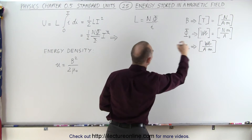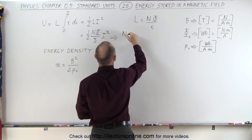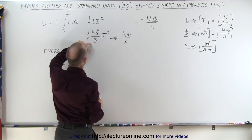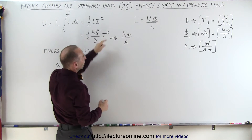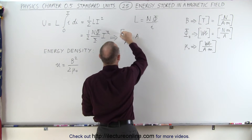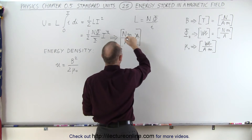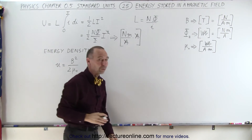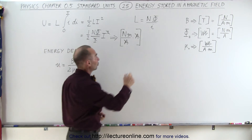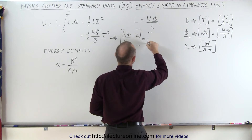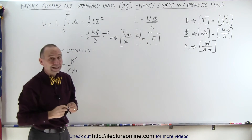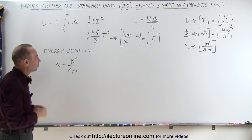We have the magnetic flux — that's Newton·meters per amp — and then we have a current in the numerator whose units are amps. Multiplying Newton·meters per amp by amps, the amps cancel out, and we're left with Newton·meters. A Newton·meter is a joule, so yes, the energy stored in the magnetic field does come out in units of joules — units of energy.